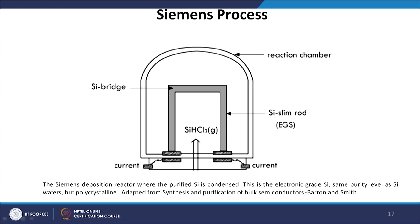In the Siemens furnace, there is a reaction chamber with silicon rods. Chlorosilane in gaseous form is condensed and goes through further fractional distillations. A current source is provided by two electrodes. In the Siemens deposition reactor, purified silicon is condensed onto a thin silicon slim rod to give electronic grade silicon — the same purity level as silicon wafers, but polycrystalline.